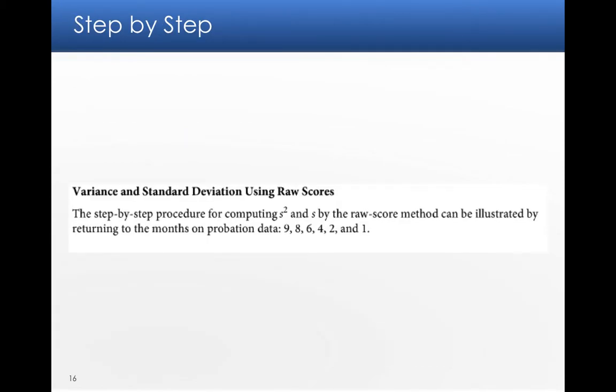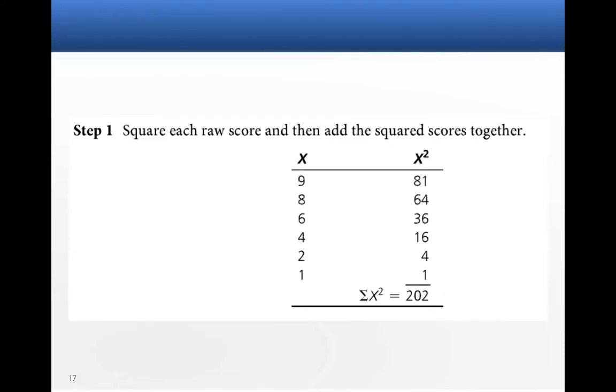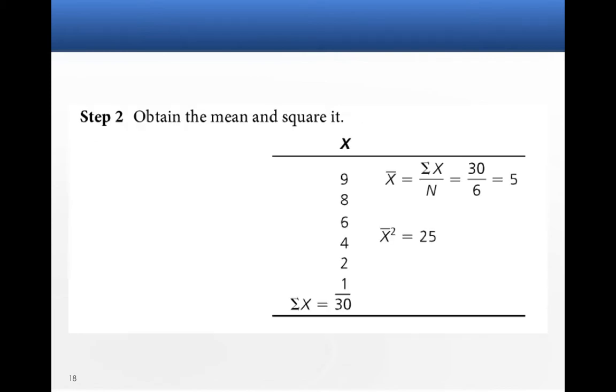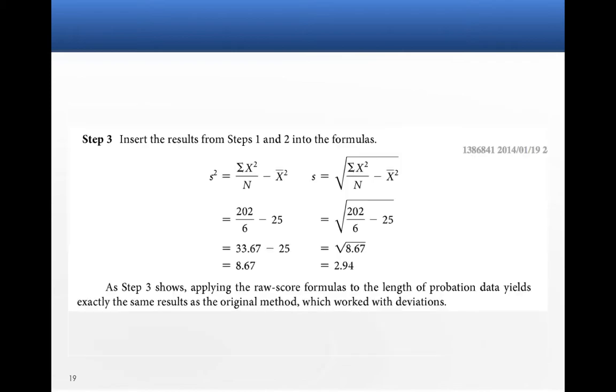So let's look at that method. So we've got the same numbers, 9, 8, 6, 4, 2, and 1. So we're going to square each raw score, 81, 64, 36, 16, 4, and 1. Sum them together for 202. We're also going to find the mean. We already knew the mean, right? The mean is 5, and then we're going to square it, which is 25.